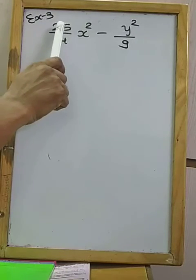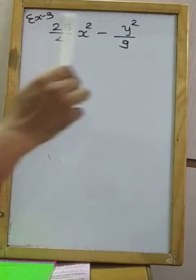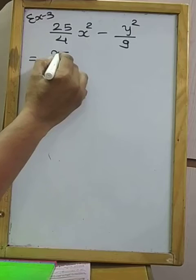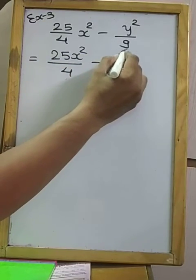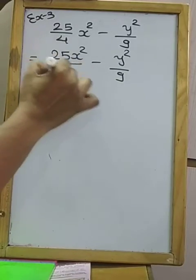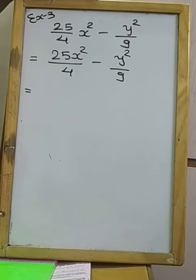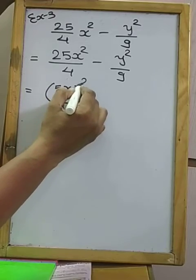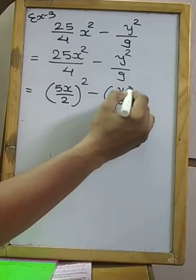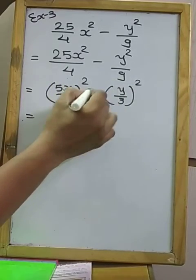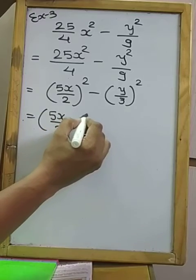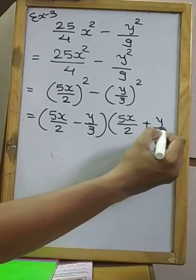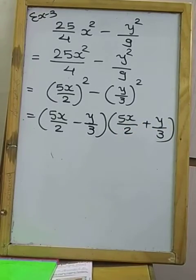Example number 3: (25/4)x² − y²/9. Numerator multiplies with numerator. We write the whole term as a perfect square. √25 = 5, √x² = x, √4 = 2, so first term is (5x/2)². And √y² = y, √9 = 3, so second term is (y/3)². Both sides are squares with minus in between, so answer is (5x/2 − y/3)(5x/2 + y/3).